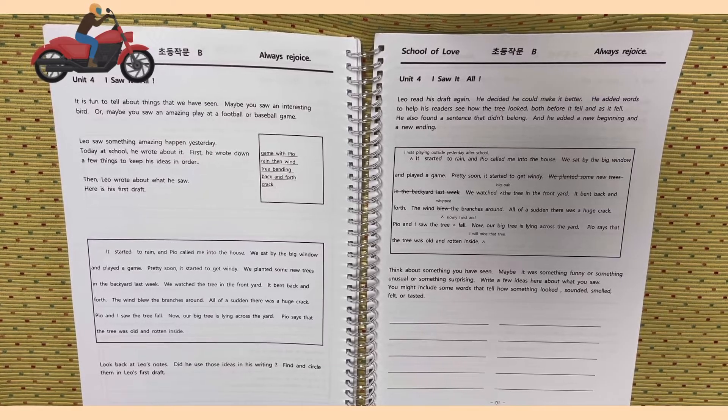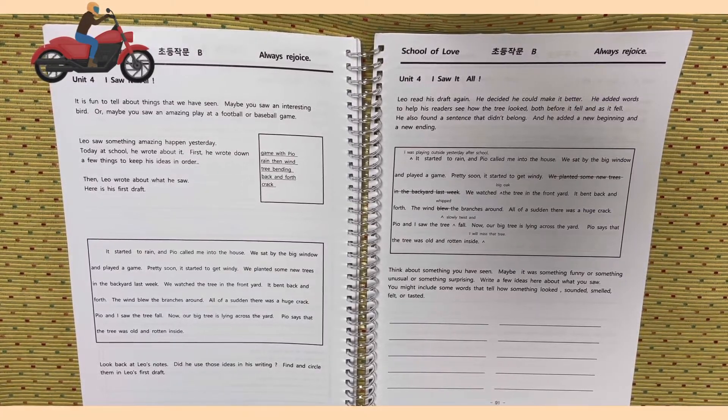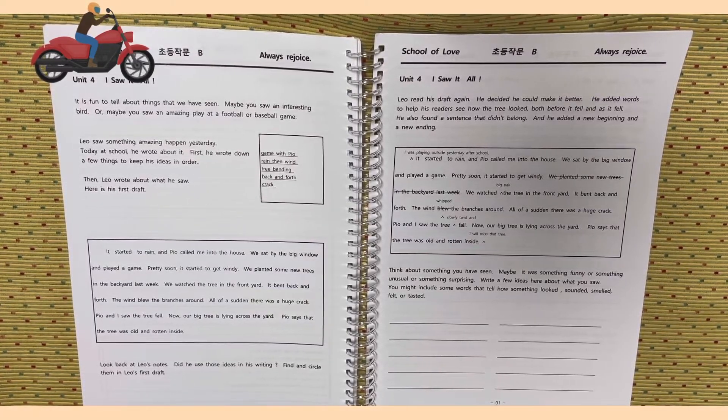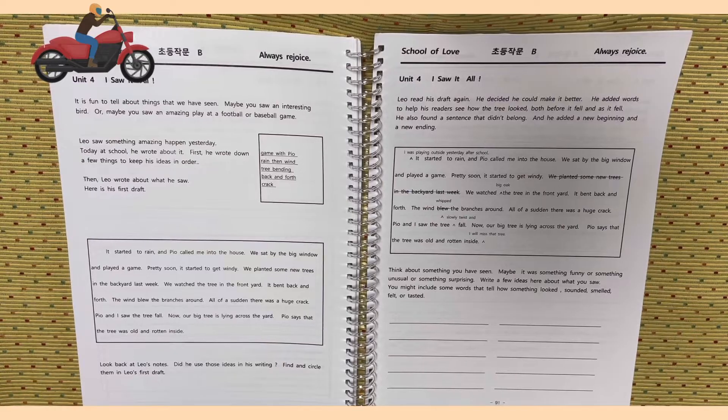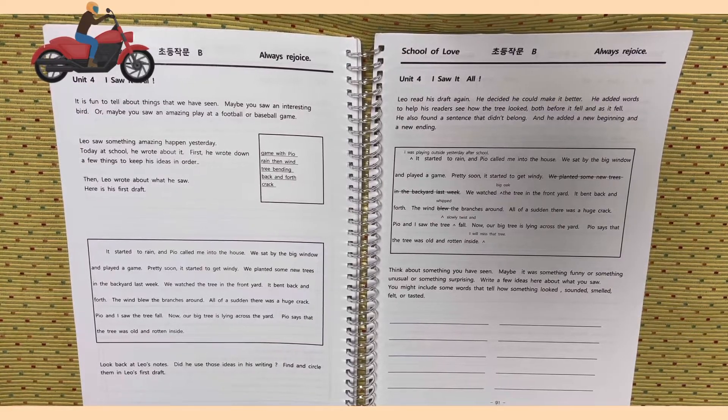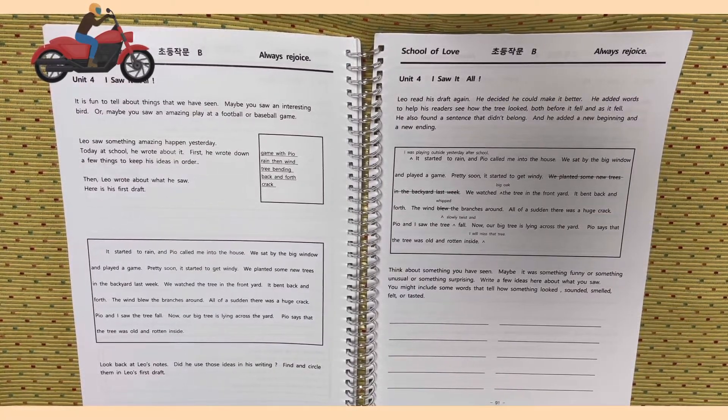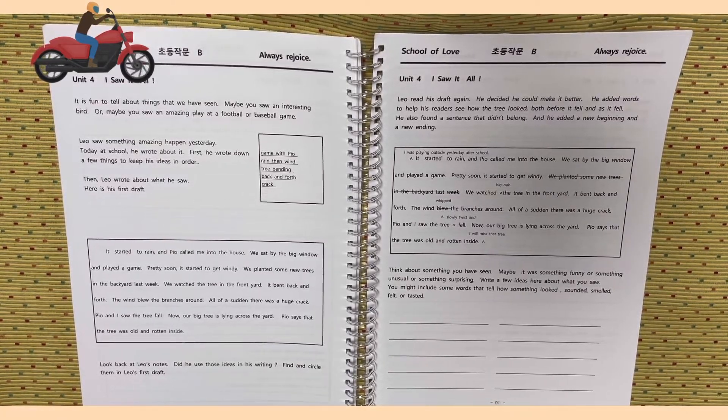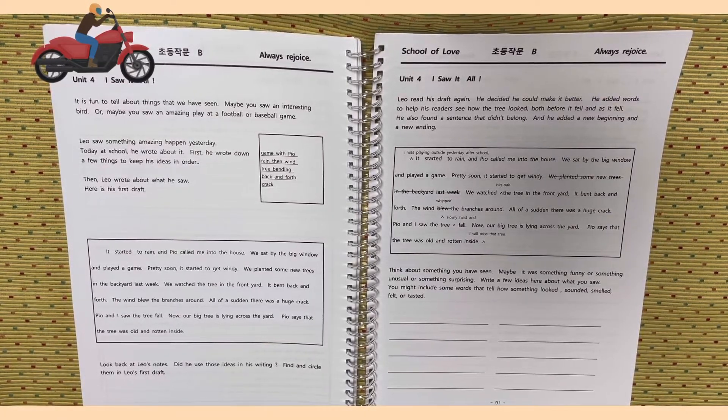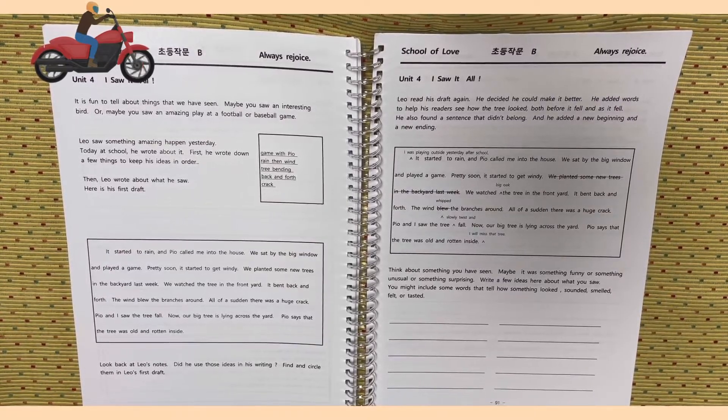It started to rain and Pio called me into the house. We sat by the big window and played a game. Pretty soon, it started to get windy. We planted some new trees in the backyard last week. We watched the tree in the front yard. It bent back and forth.